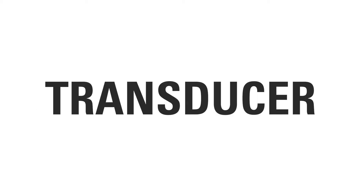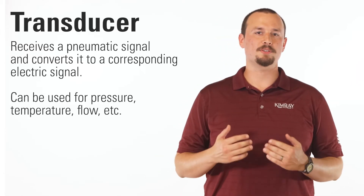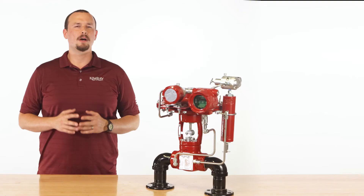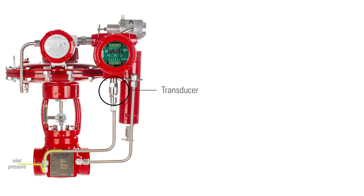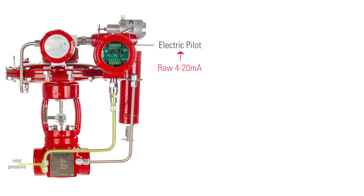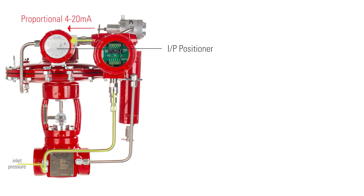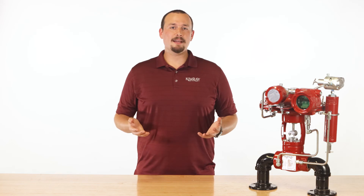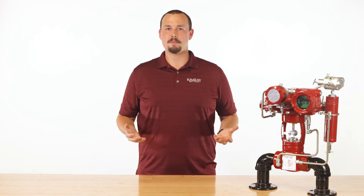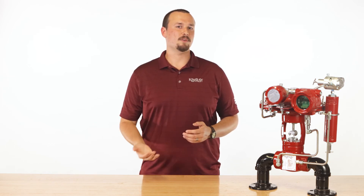Next, let's talk about transducers. The transducer receives a pneumatic signal and converts it to a corresponding electrical signal. One example of an I2P and transducer working together is on our electric valve controller. On this package, the transducer measures process pressure and gives a raw 4 to 20 milliamp signal to the pilot. The electric pilot then takes that signal and converts it to a proportional 4 to 20 milliamp signal and sends that to the I2P positioner. The I2P positioner converts that electric input signal to a corresponding 6 to 30 psi output signal and sends that level of supply gas to the high pressure control valve. Some people wonder why they need the pilot in this instance. Without the pilot, there is no decision maker. The pilot takes that raw transducer signal and converts it to an accurate, corresponding pressure.